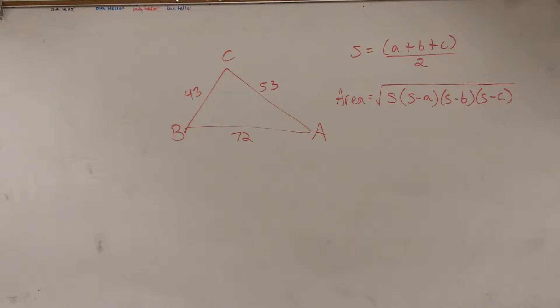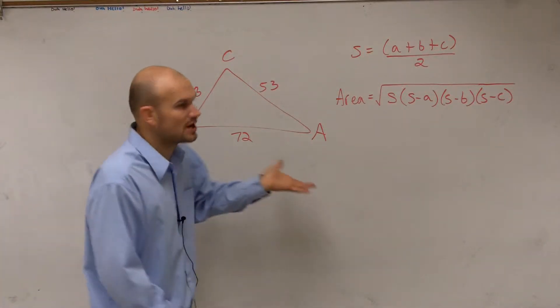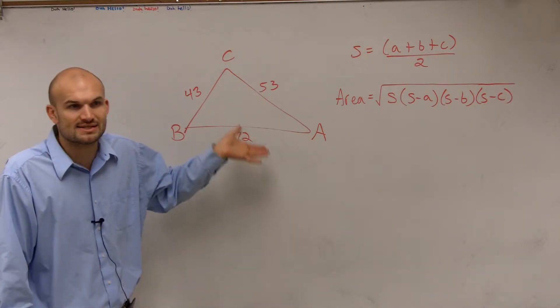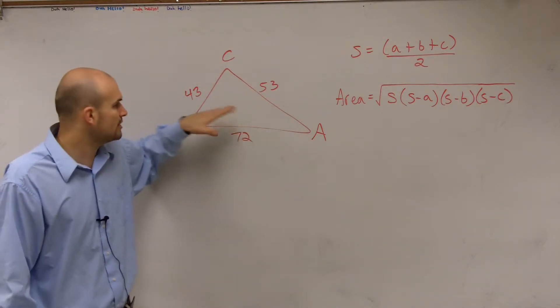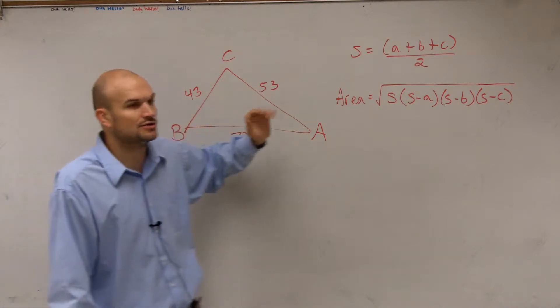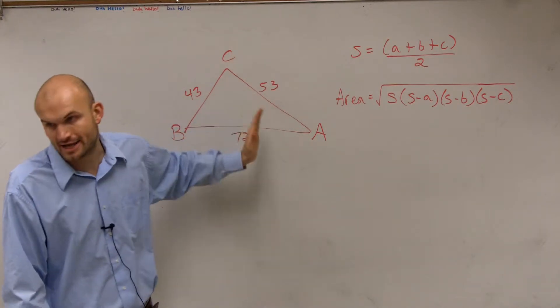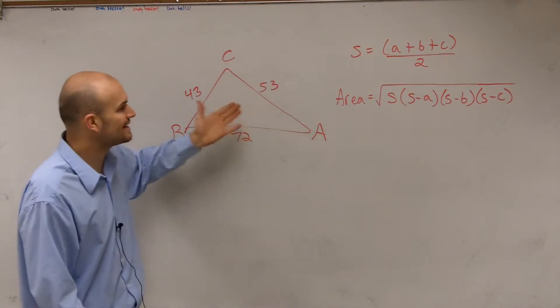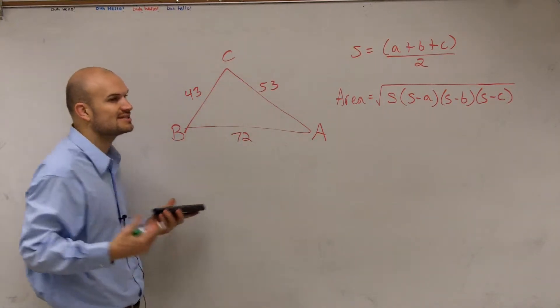All right. So for this problem, we need to find the area of our triangle. But the problem is, when finding the area of a triangle, we always had to find out what our height was, right? We were at least given an angle and could use the sine value to find our angle, or we were given a right triangle and somehow we had the height. In this case, we're not given any of the heights.